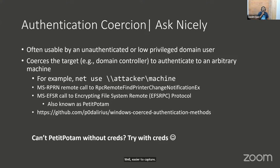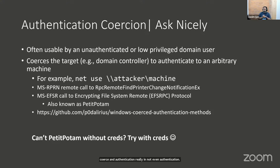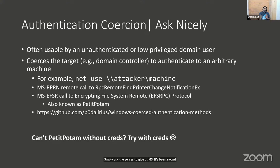Second way to capture credentials: authentication coercion — simply asking nicely. Previously we were listening and responding; here we are asking very nicely, 'can you talk to us?' The PetitPotam vulnerability came out around 2021, using a Windows API to coerce an authentication — really a communication — from the domain controller. Some of you may remember the old printer vulnerability, PrintSpooler (SpoolSS / MS-RPRN), where you could do the same thing: simply ask the server to communicate without authentication and still get NetNTLM hashes.